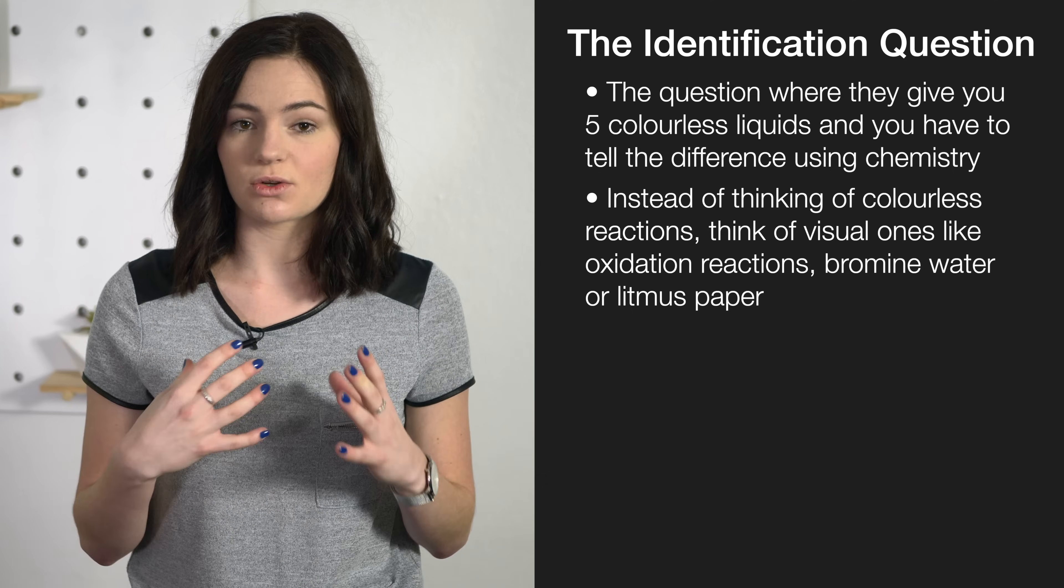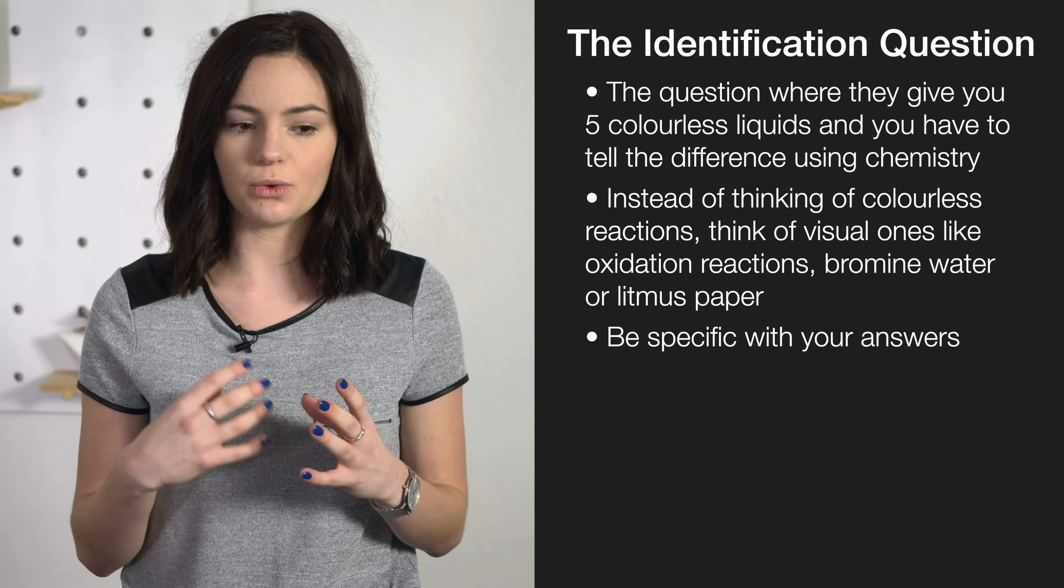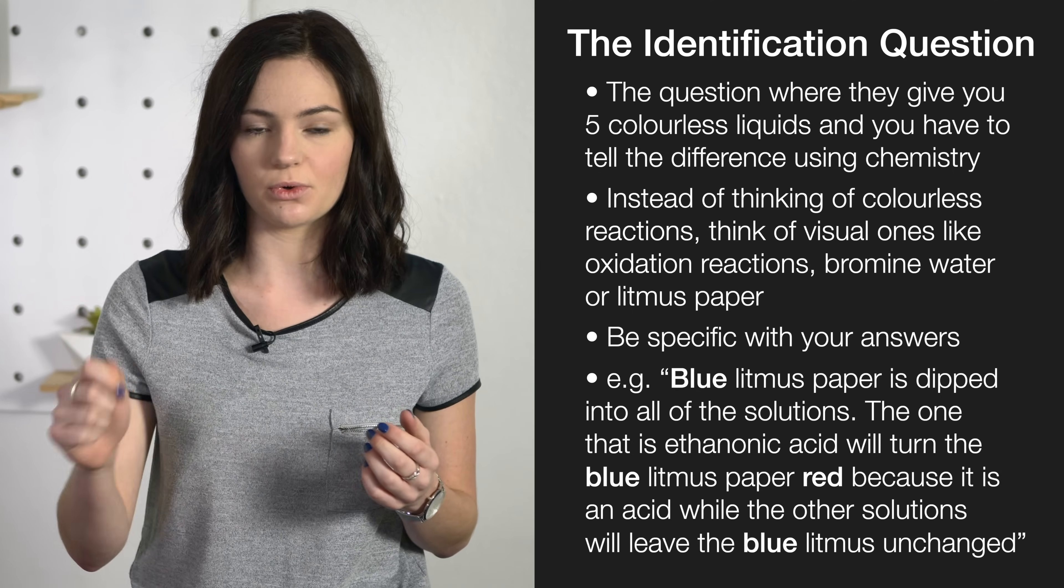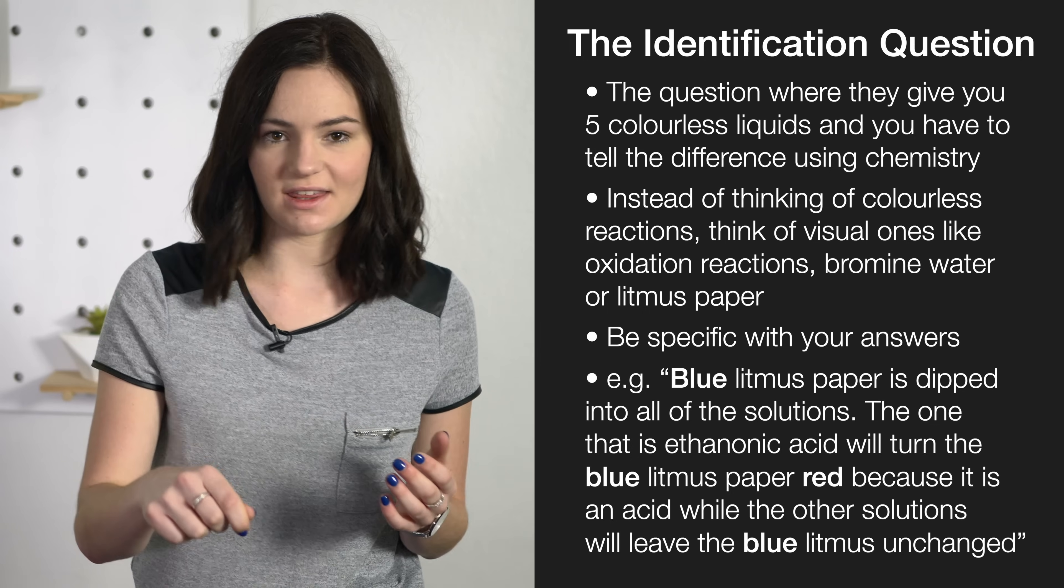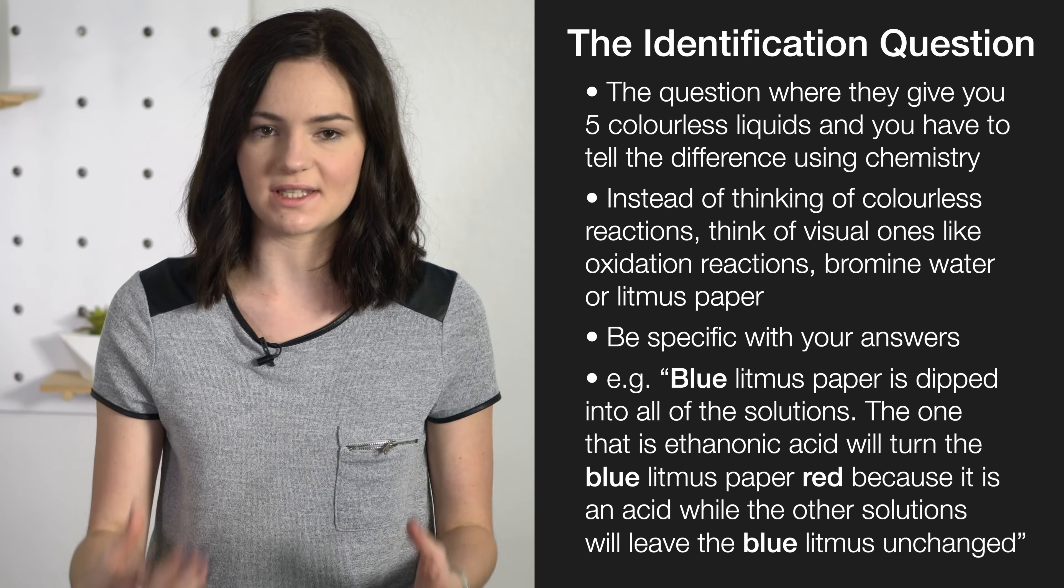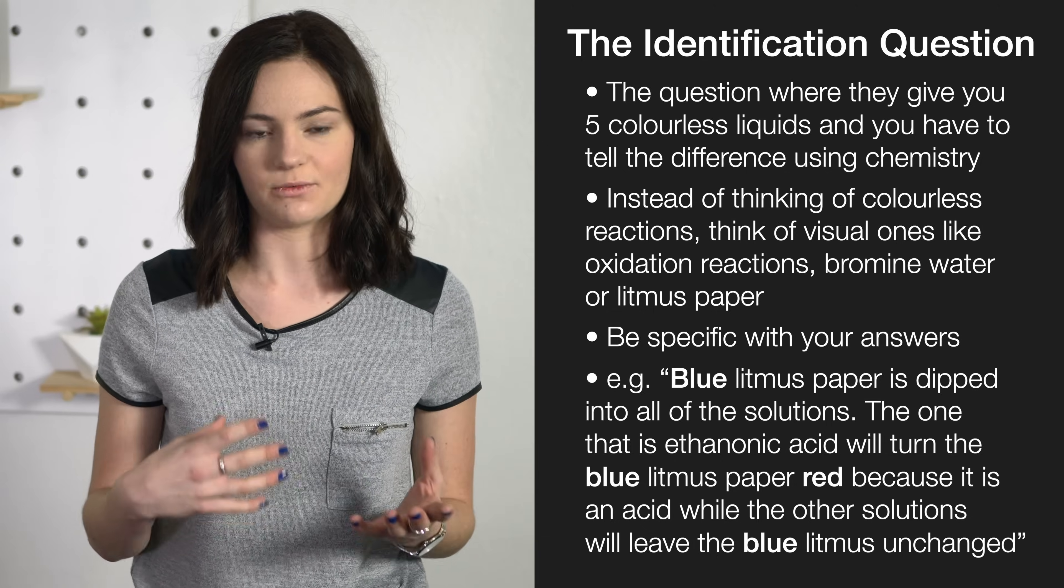When writing out your answers, it's good to be specific. So if you are putting blue litmus paper into all the different solutions, the one that's ethanoic acid is going to turn red because it's an acid, while the other ones are all going to remain unchanged.